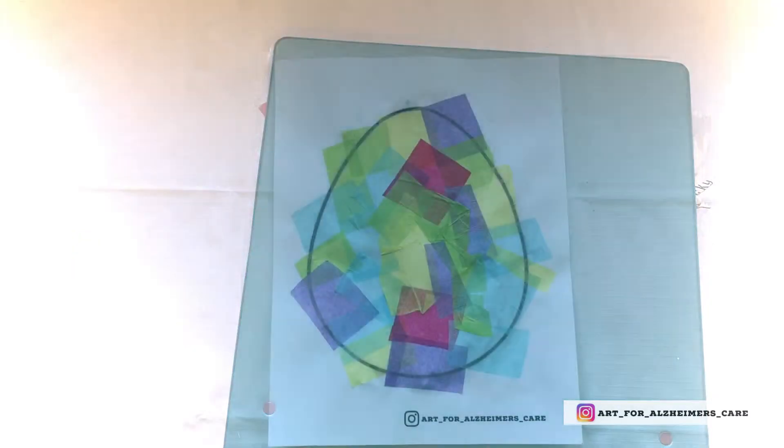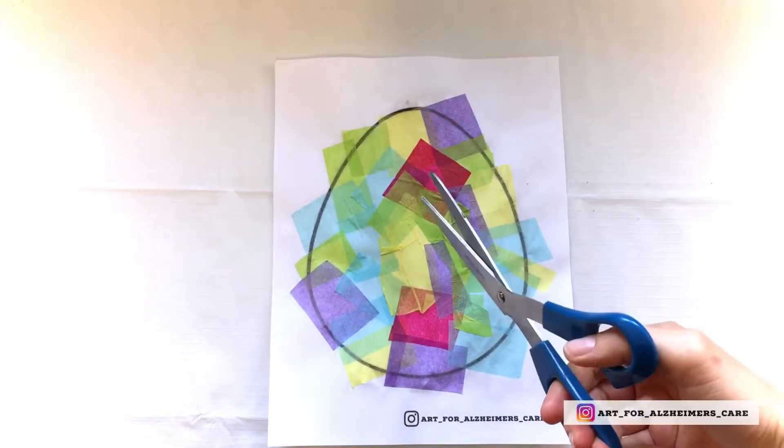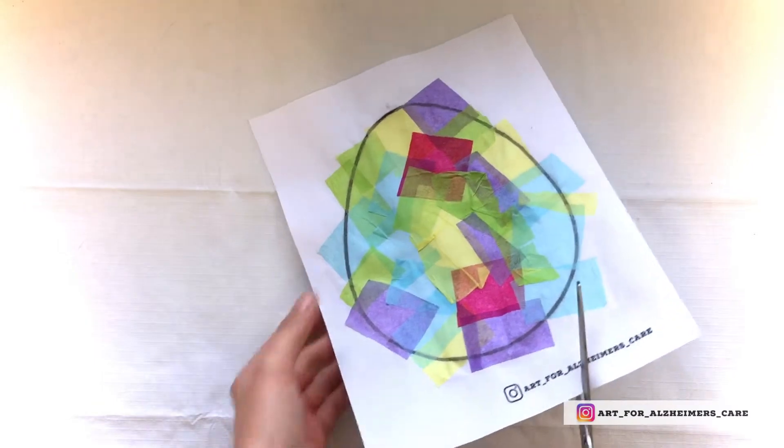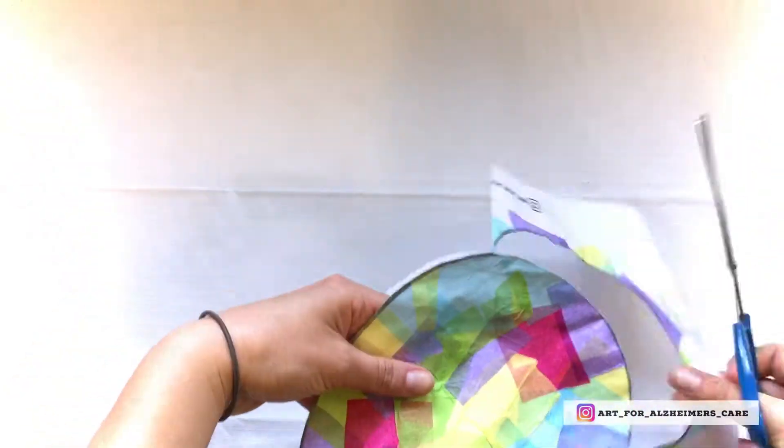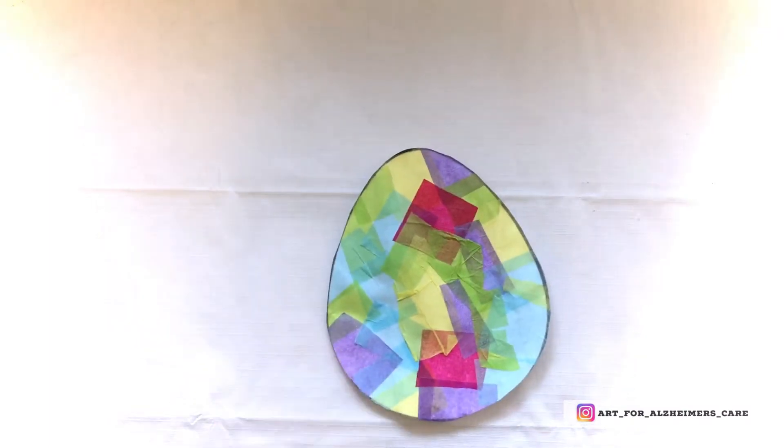When it's dry you can remove the book and pull off the parchment paper and it will be quite nice and flat. So once it's dry go ahead and cut out the egg. As you can see you can still see the outline through the tissue paper once it's dry.